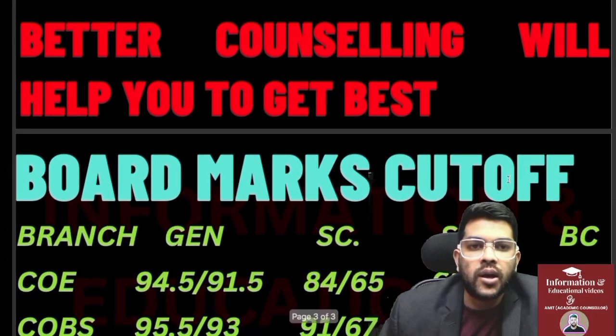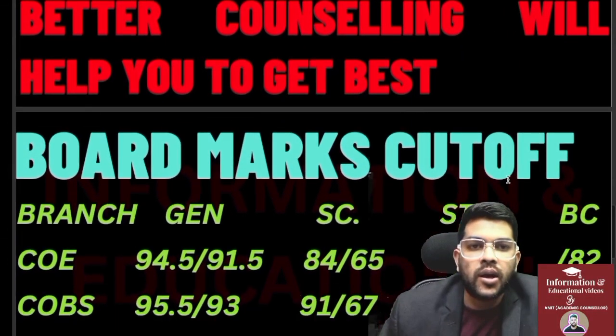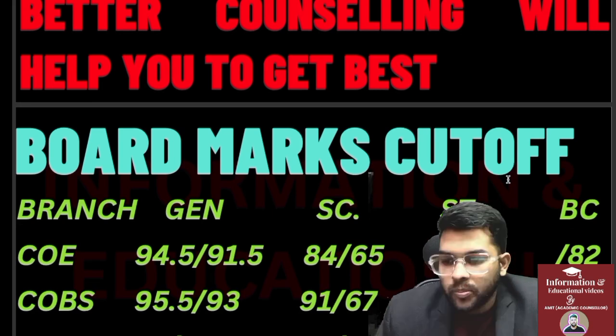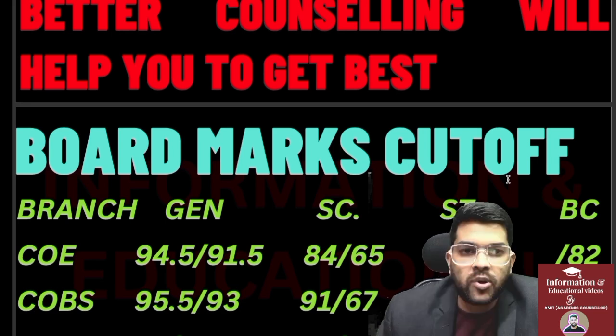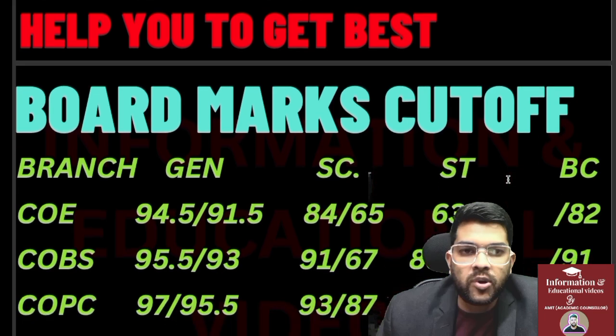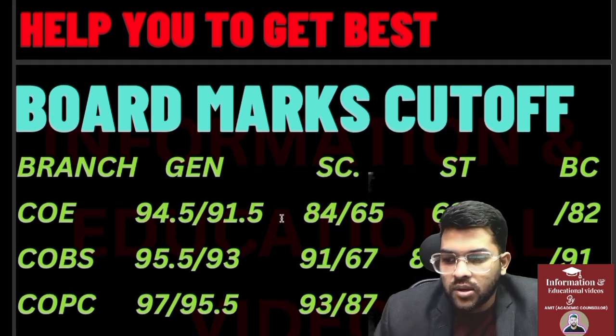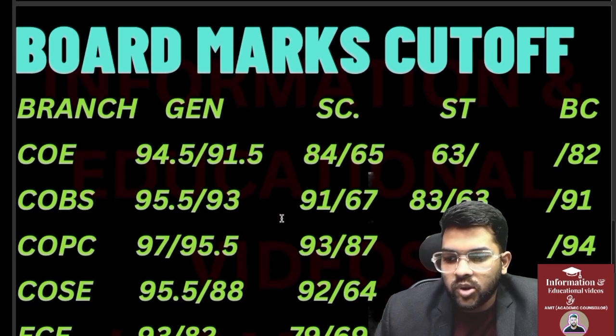Now for the board marks cutoff: for COE, the cutoff is 94.5% and 91.5% for general — before slash is outside Punjab, after slash is Punjab. For SC, 84% and 65%; for ST, 63%; for BC, 82% (only Punjab quota is available for BC). For COBS, 95.5% — other categories can be checked on screen.